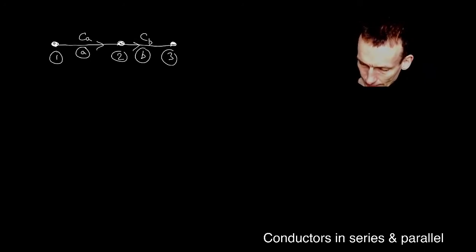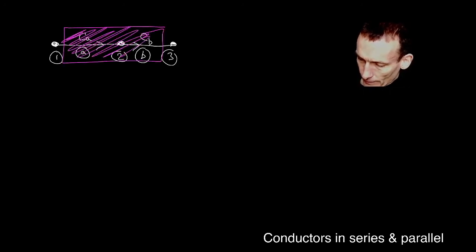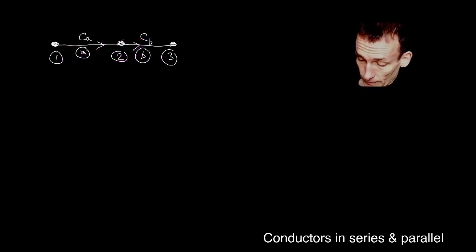And again, think of it this way. I basically want to draw a box around these and think of it as a single conductor joining one and three. So in particular, I want to be able to set this to one and X three to zero and find out what the current flowing through there is to find out the effective conductance.